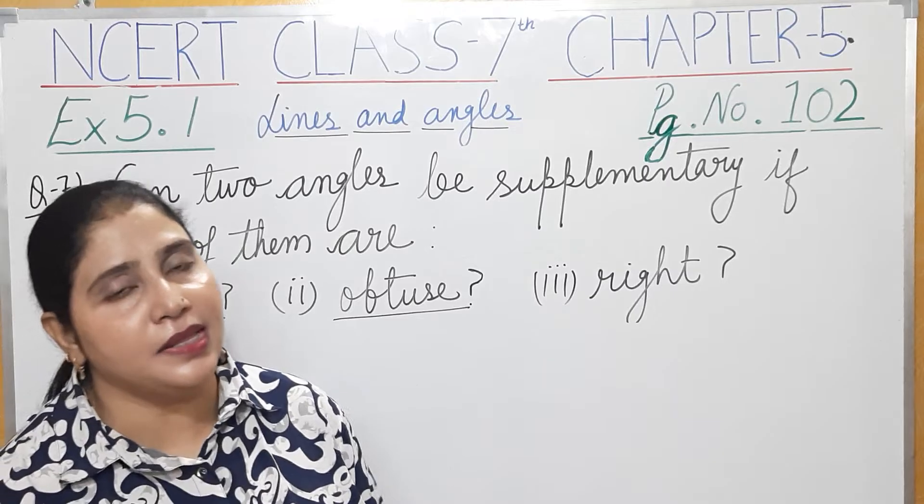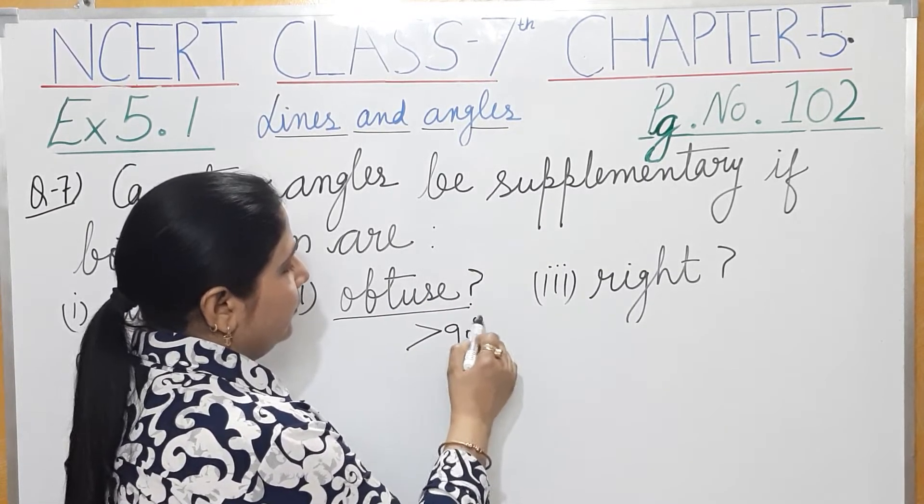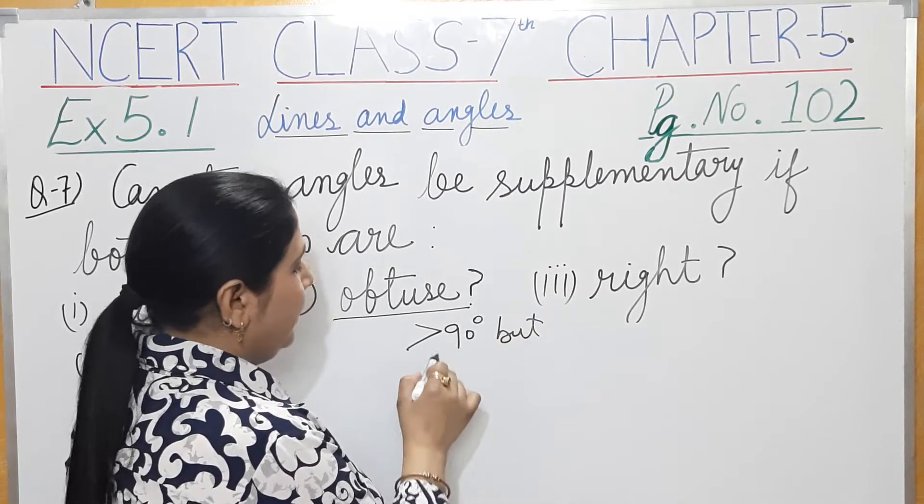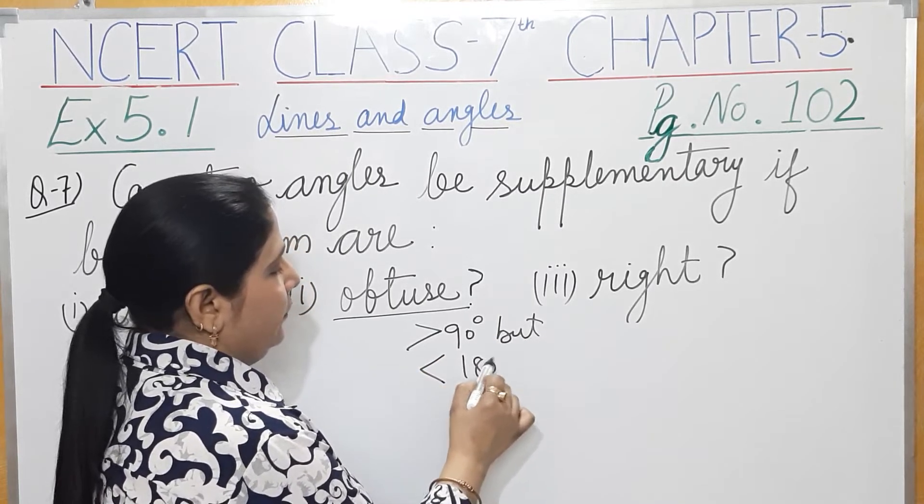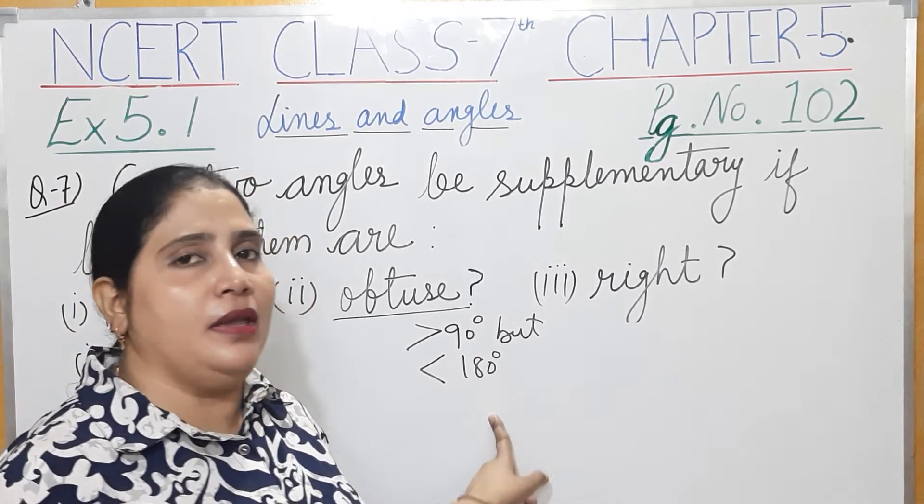They are greater than 90 degrees but less than 180 degrees. The angles between 90 degrees and 180 degrees are: